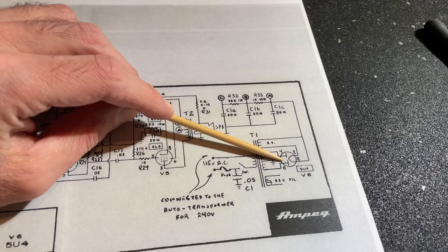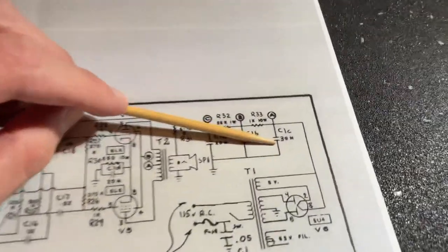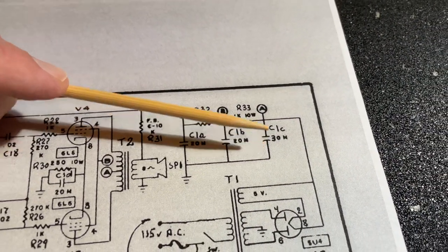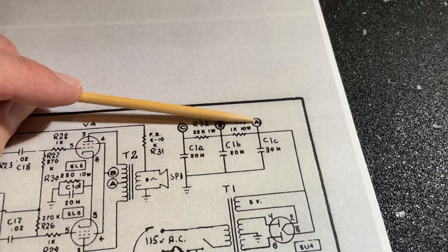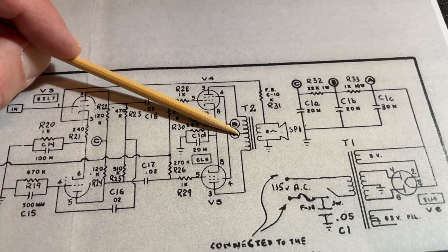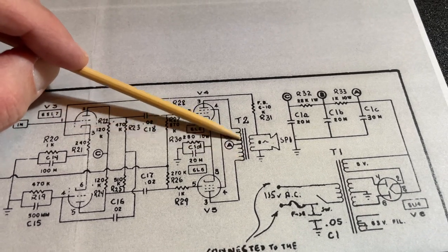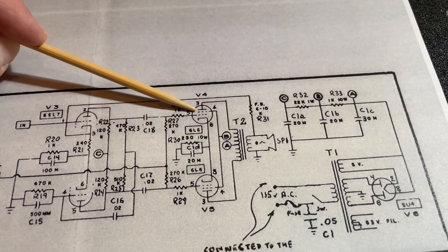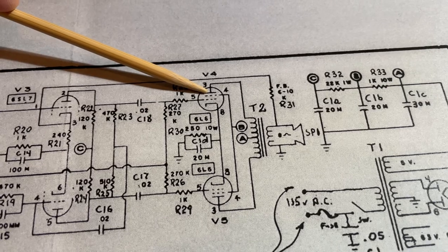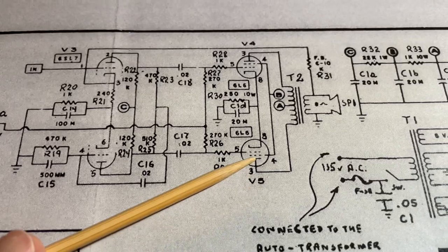Here's that 5U4. Pin 8 comes up over here. It comes to this 30 microfarad capacitor in the can. The first one it hits, that's node A. A is over here. It's on the center tap of the primary side of the output transformer. And that feeds pin 3 on each of the two 6L6s, the plate. So it's up here and then it is down here.